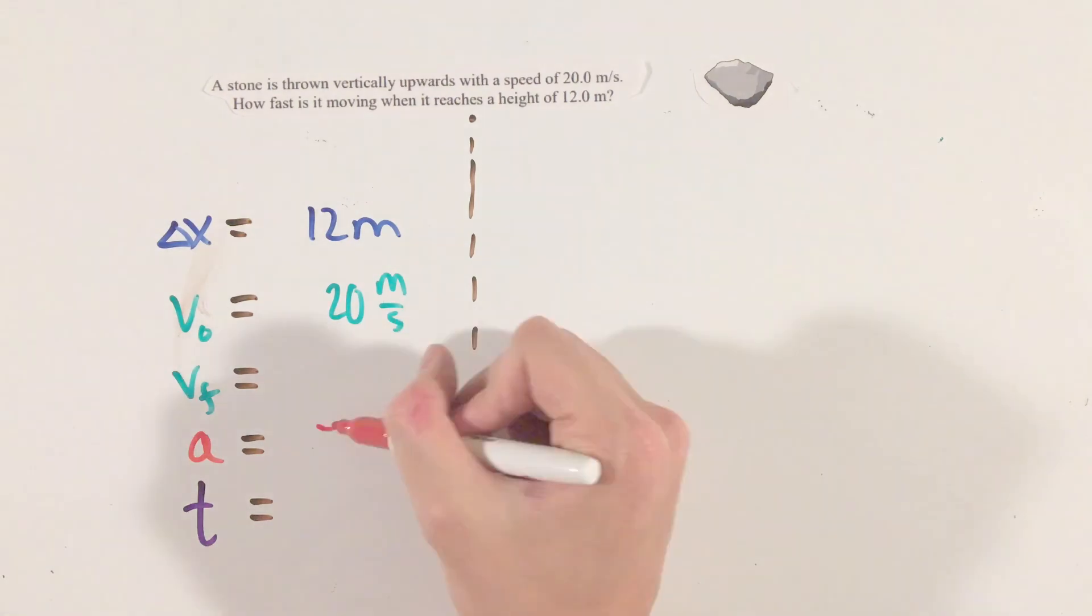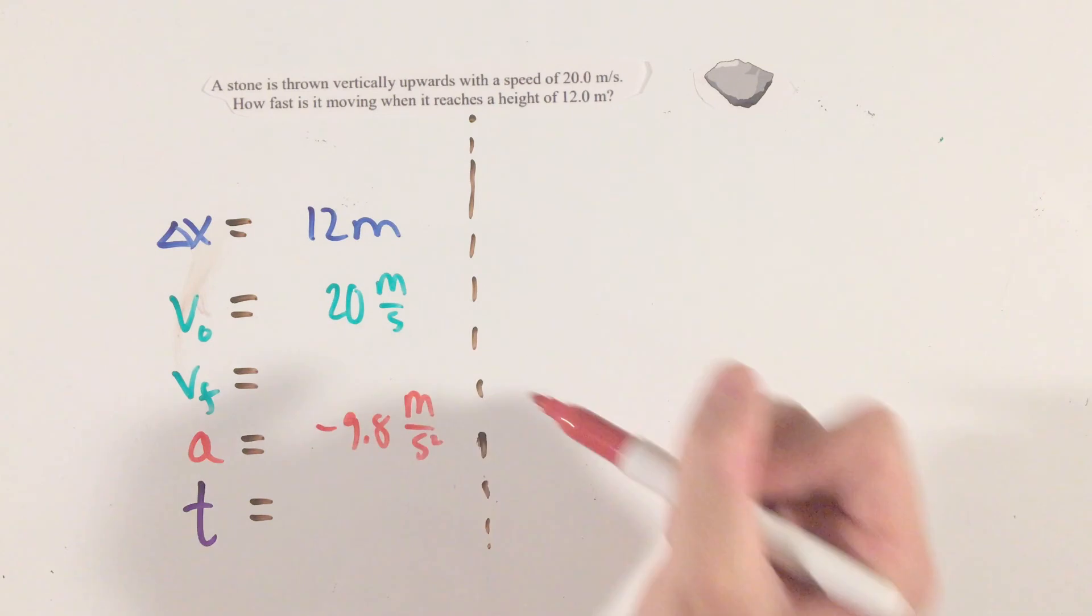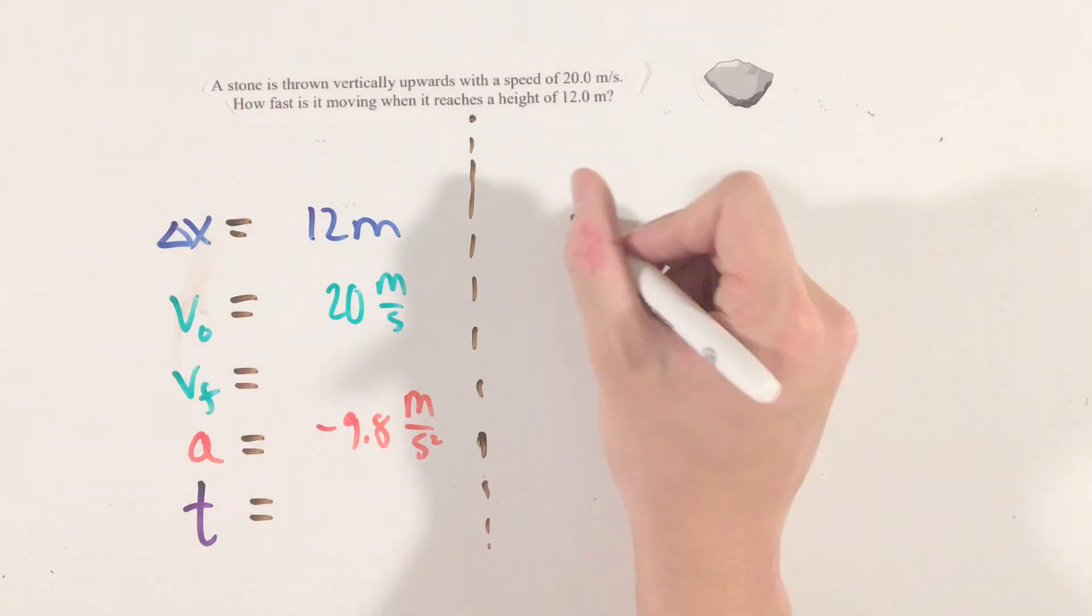However, the vital thing to remember, especially in the upcoming units on projectile motion and 2D kinematics, is that the acceleration due to gravity is always 9.8 meters per second squared, pointed downwards.